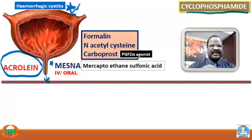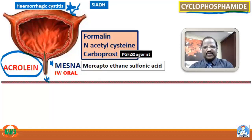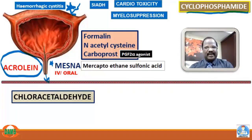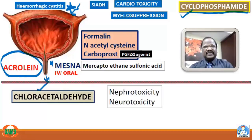Other adverse effects of cyclophosphamide include SIADH — causing antidiuretic hormone action, water retention, and dilutional hyponatremia — as well as cardiotoxicity and myelosuppression. In summary, the important adverse effects of cyclophosphamide are: hemorrhagic cystitis, SIADH, cardiotoxicity, myelosuppression. The metabolite chloroacetaldehyde causes nephrotoxicity and neurotoxicity.